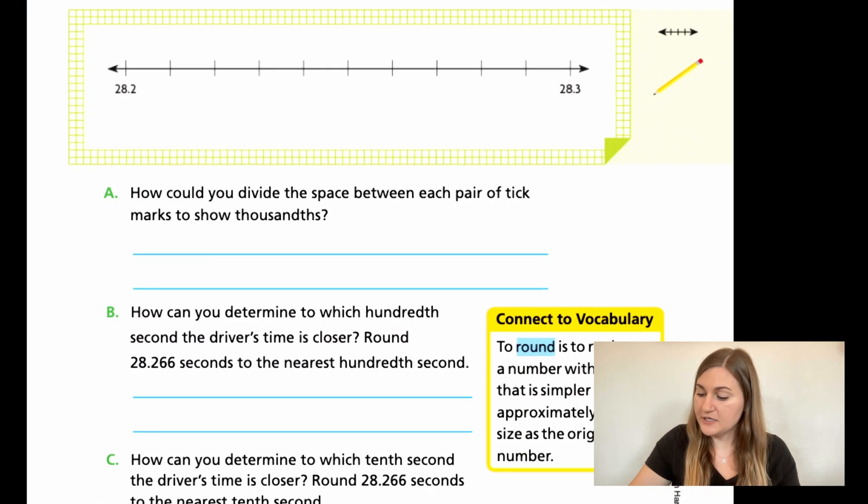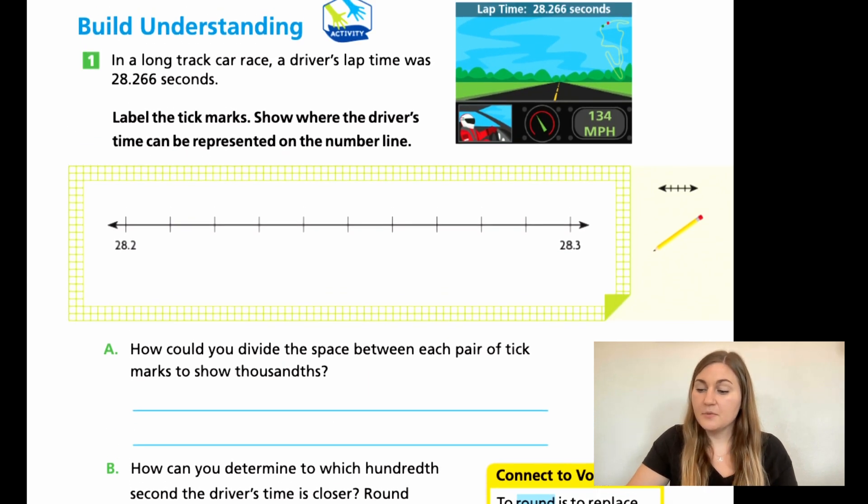All right, let's go ahead and flip the page. Now we're on 328. Number one says, in a long track car race, a driver's lap time was 28.266, or practicing saying it correctly would be 28 and 266 thousandths seconds. So label the tick marks. Show where the driver's time can be represented on the number line. So if we're looking at the number line, we already have 28.2, and at the very end it's 28.3. So at each end we have tenths, which means the tick marks in between are going to be going to the hundredths place value. And then you want to mark the thousandths as close as you can in between your two hundredths.